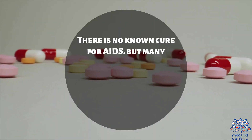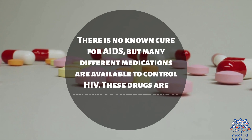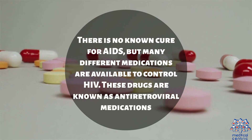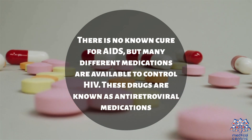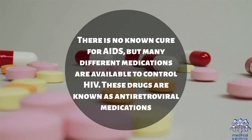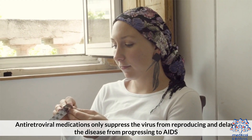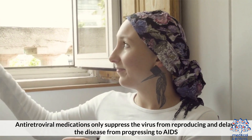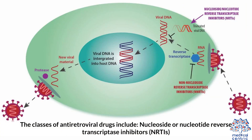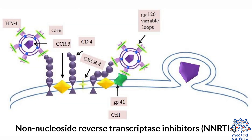There is no cure for AIDS, but many different medications are available to control HIV. These drugs are known as antiretroviral medications. Antiretroviral medications suppress the virus by preventing it from reproducing and delay the disease from progressing to AIDS. The classes of antiretrovirals include nucleoside or nucleotide reverse transcriptase inhibitors, NRTIs, and non-nucleoside reverse transcriptase inhibitors, NNRTIs.